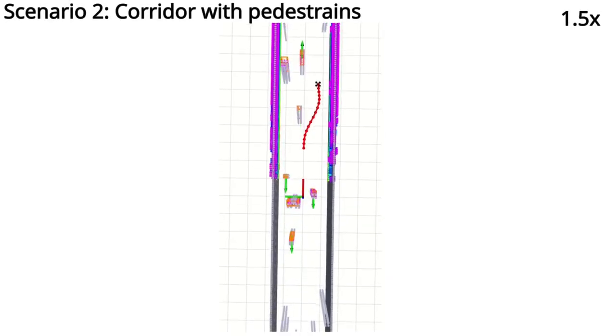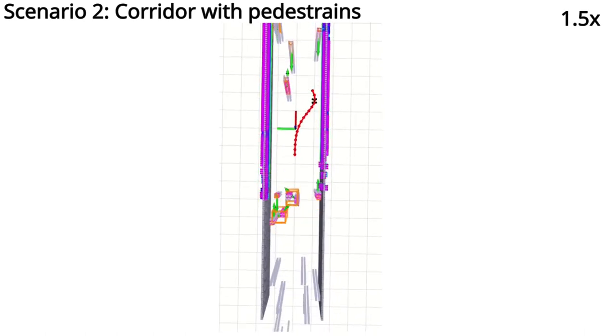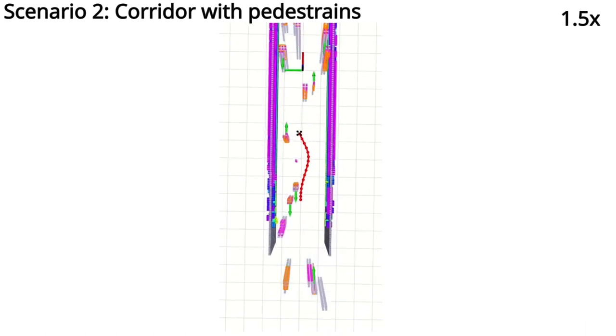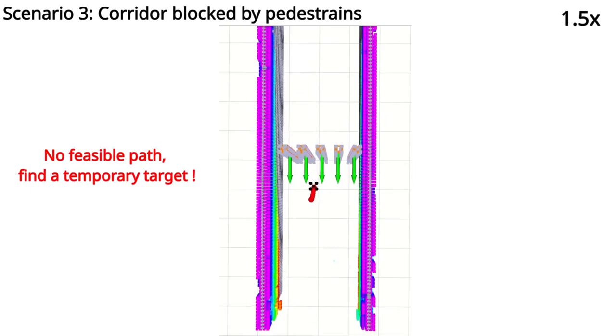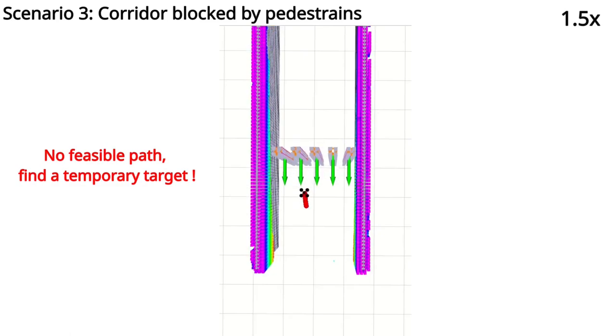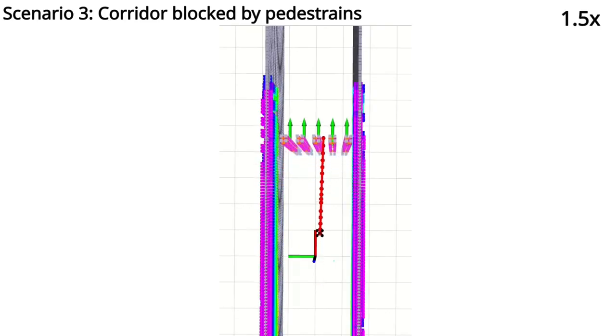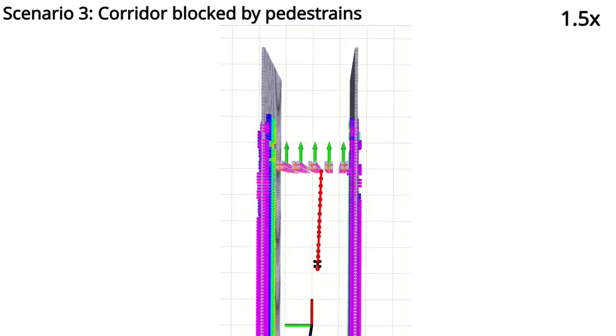The second scenario is a narrow cluttered corridor; the UAV can fly through the corridor without collisions. The third scenario is a blocked corridor, the UAV can choose a temporary target and fly safely, even when the trajectory optimization fails to find a feasible solution.